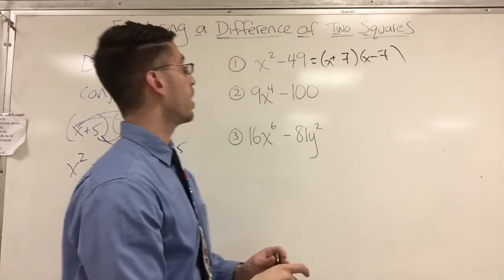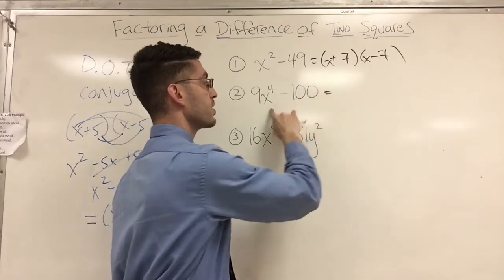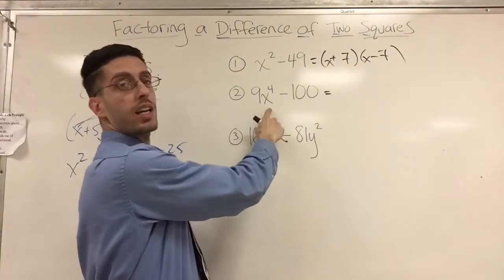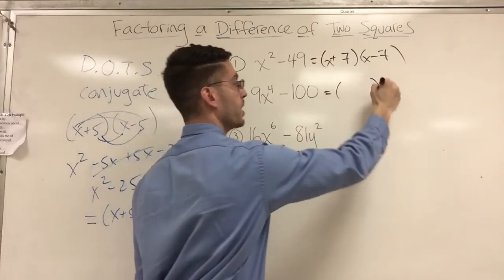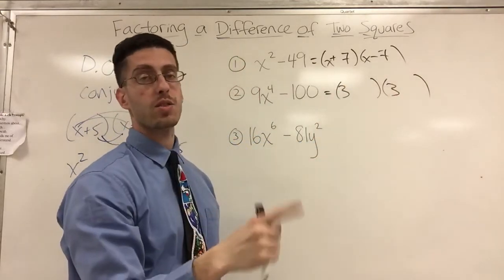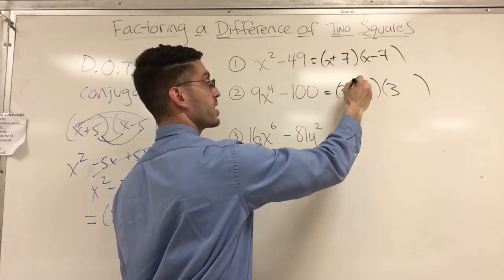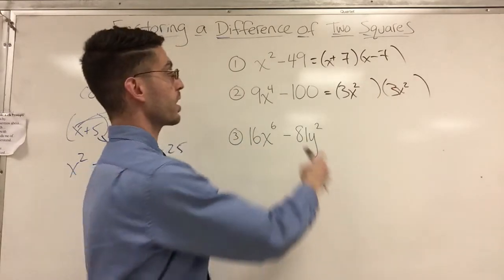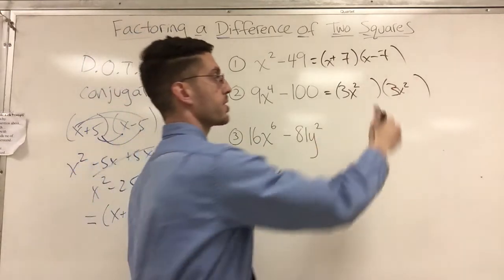How about here? Is this a difference of two squares? Absolutely. What is it? Square root of 9x to the fourth - think about it. How do I get nine? Three times three. How do I get 9x to the fourth? I need a 3x to the second and another 3x to the second. How do I get 100? That's easy - plus ten, minus ten.